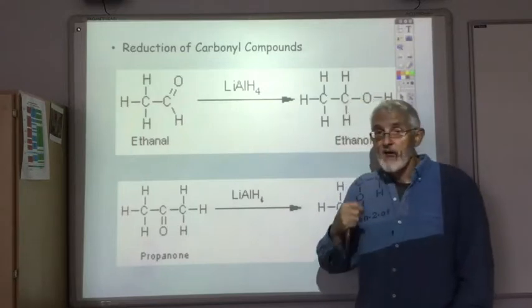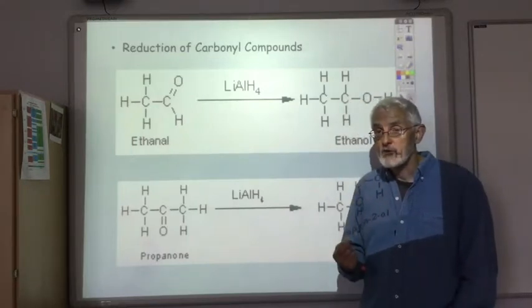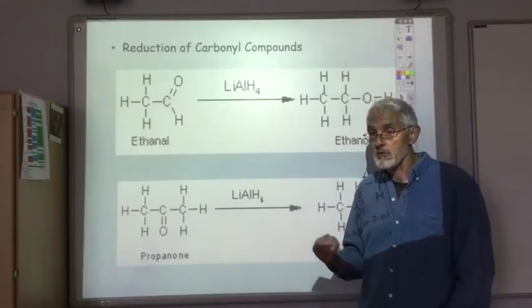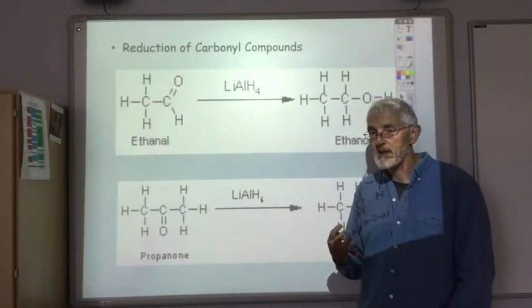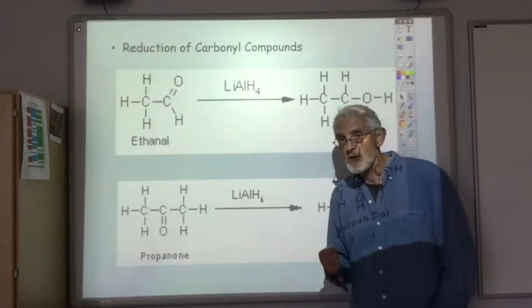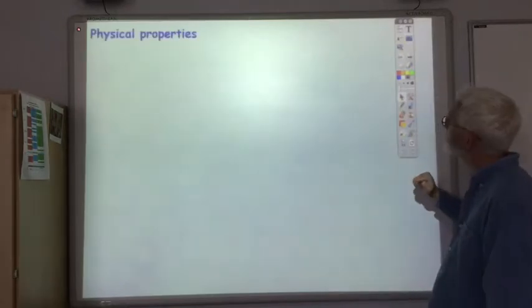So those are the four ways you should know — the different routes we can take to make an alcohol. Now I want to look at the physical properties of the alcohol.